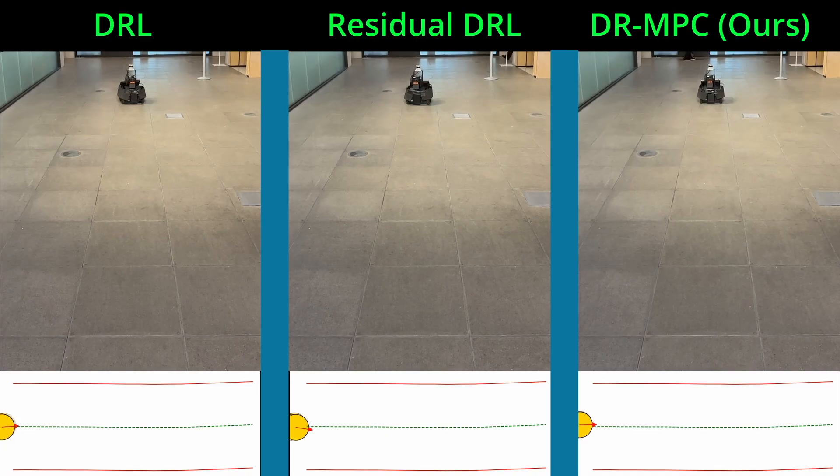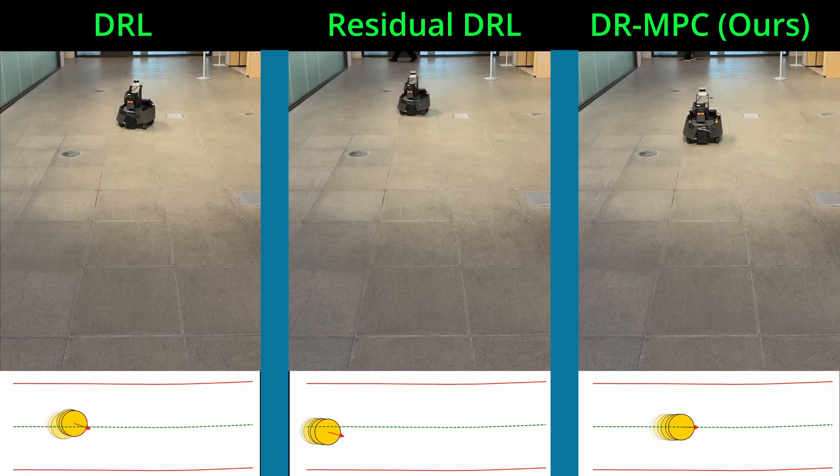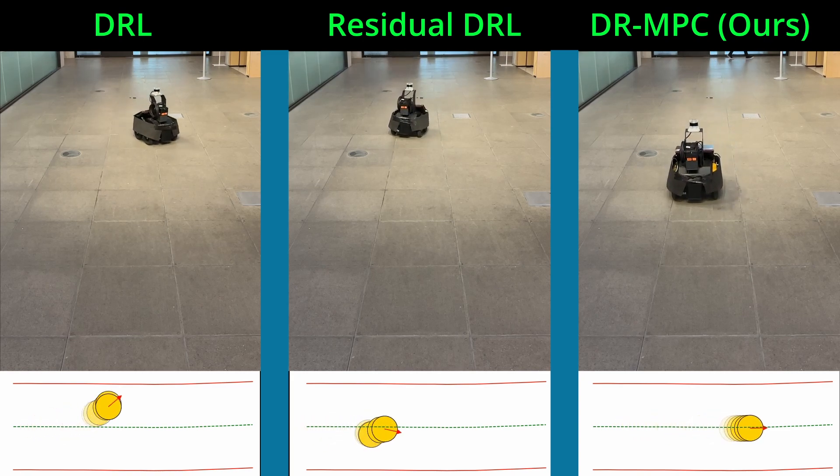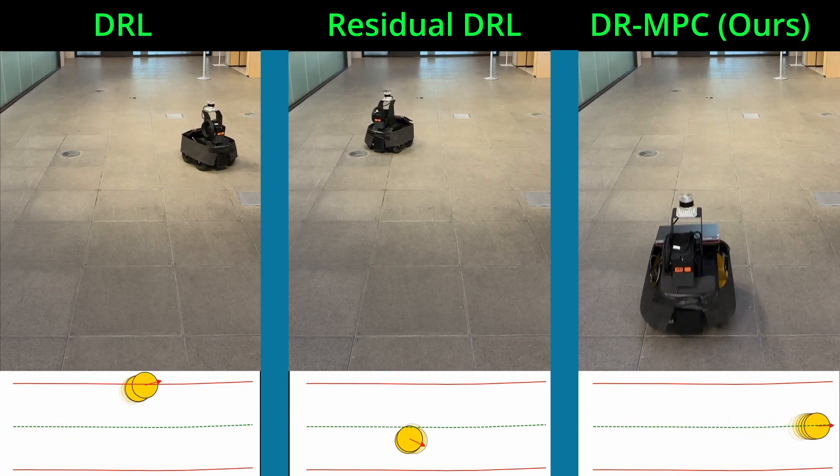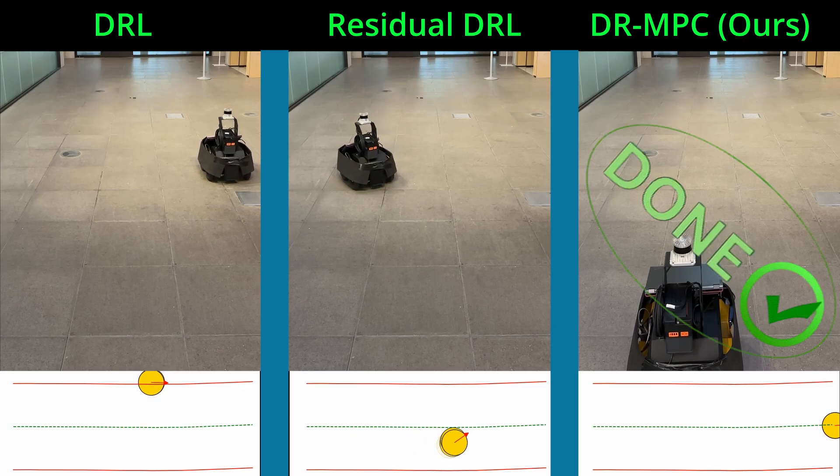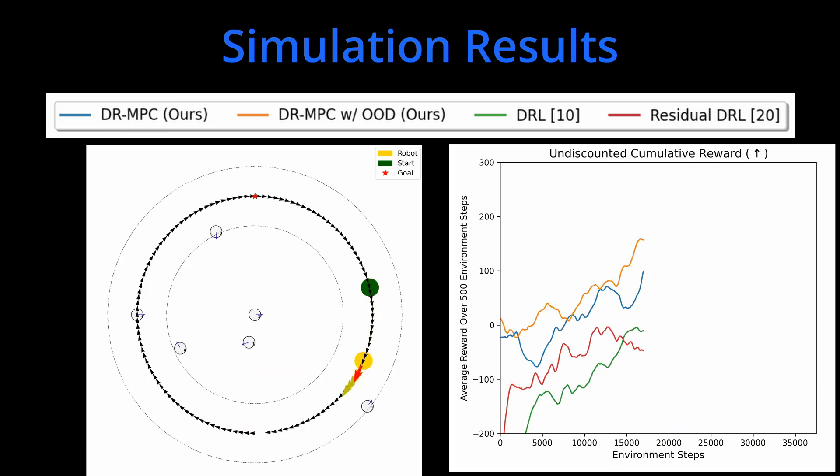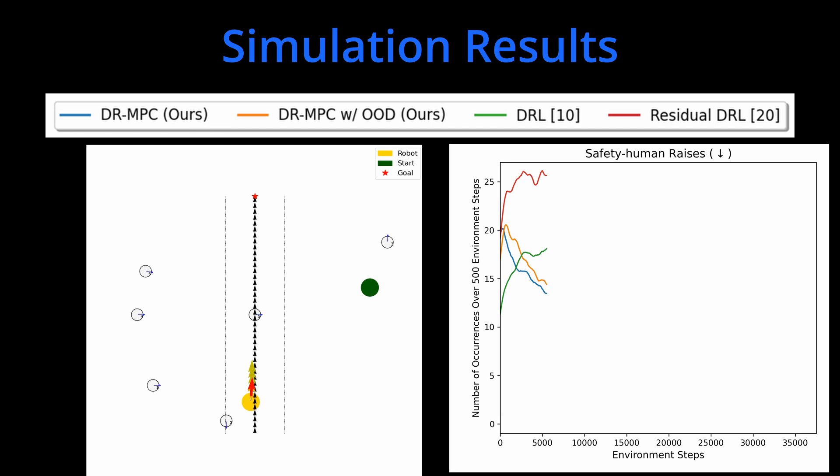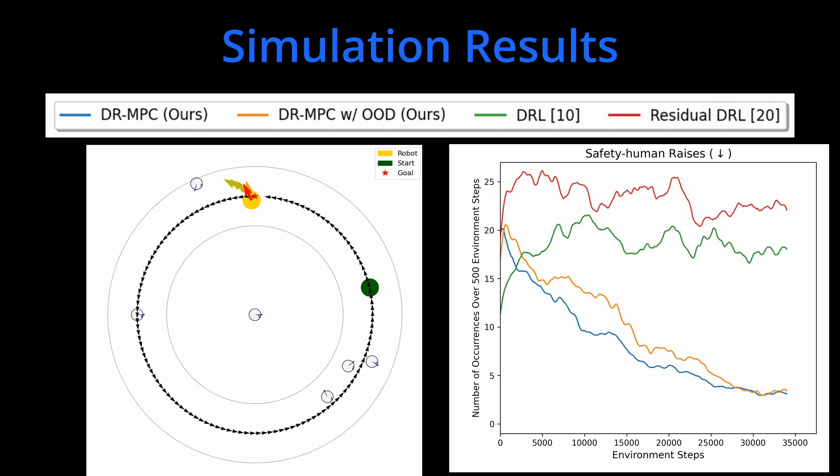On the left here, regular DRL wafts around and hits the corridor. Residual DRL can make some progress, but our Dr. MPC model can already track the path at model initialization. By intelligently leveraging MPC path tracking, we show in simulation that our models learn substantially faster than regular DRL and residual DRL models.